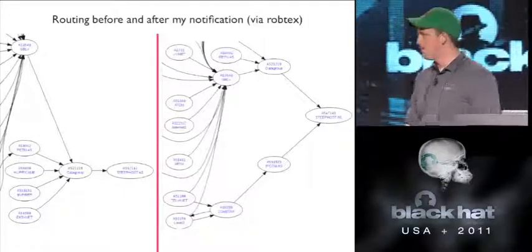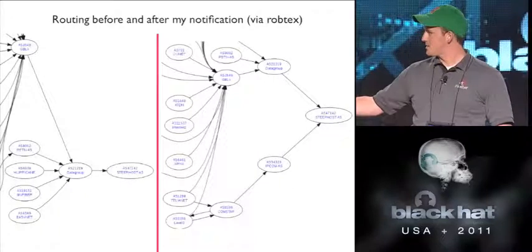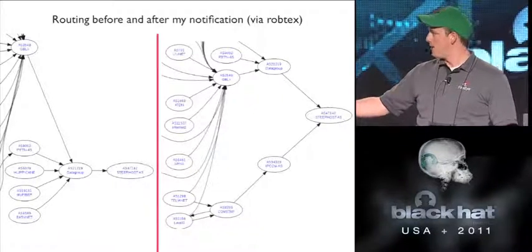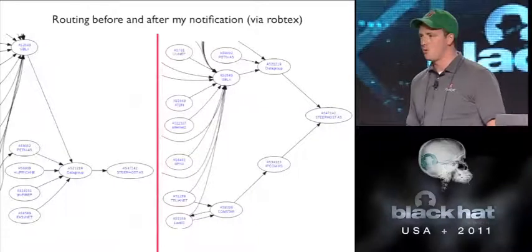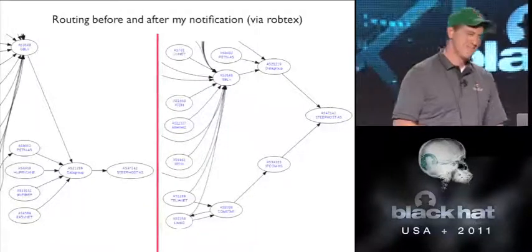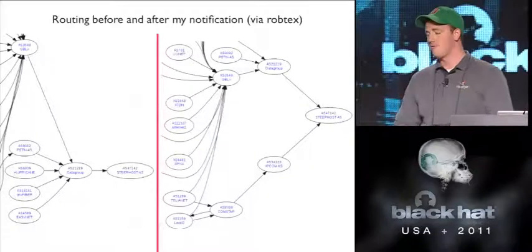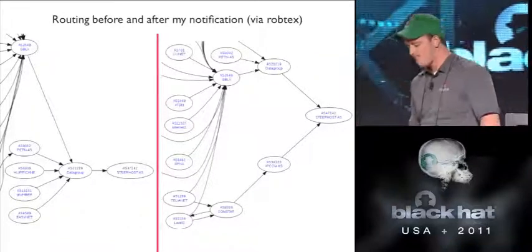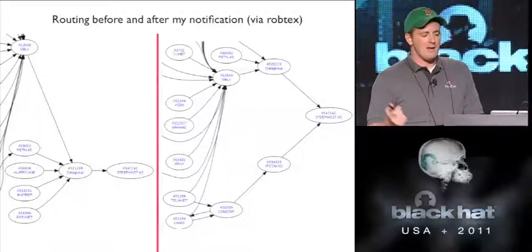What did the bad guys do? What did Steepost do? They got a backup provider so that if someone was null routing their connections. Before, all traffic went through Data Group, but when the null route was placed on Global Crossing, they got a backup provider just for a little bit of resiliency. With a little bit of pressure it forced them to go buy more connectivity. Was that good? Not really — it didn't have any operational effect in terms of overall spam on the internet. The computers are still infected. It put them out of business for maybe half an hour. But because these guys are in a legitimate data center — like a peering point or internet exchange — they had access to all these tier one or tier two internet providers, so they just buy transit from other people.